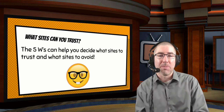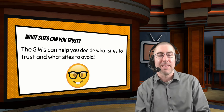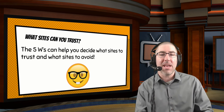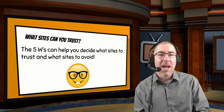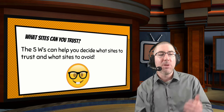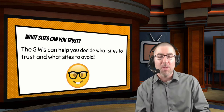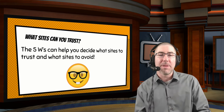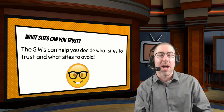Now we're going to transition a little. This next section talks about website validity. I don't go into great depth here — I have other lessons for that — but I do a quick overview using the five W's, which everybody's familiar with. How we use it for websites is a little different than the traditional who, what, where, when, why.